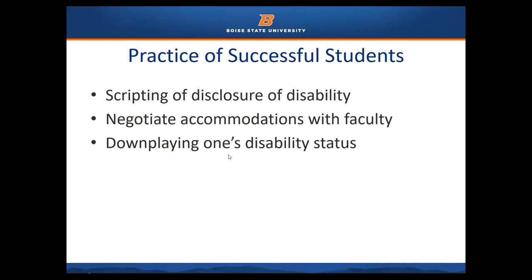While students with disabilities are at a disadvantage in comparison with their peers, research has shown three practices of successful students with disabilities. This relates to self-advocacy and self-awareness of their abilities, particularly in an educational setting. The first practice is scripting disclosures of disabilities — being able to describe how a disability can impact performance and the learning experience overall. The second practice is to be able to negotiate accommodations with faculty. The third practice is downplaying one's disability status or ultimately foregoing the disclosure of the disability altogether.